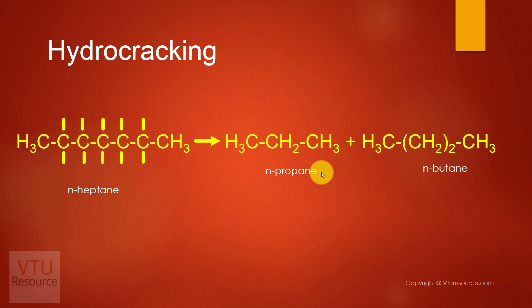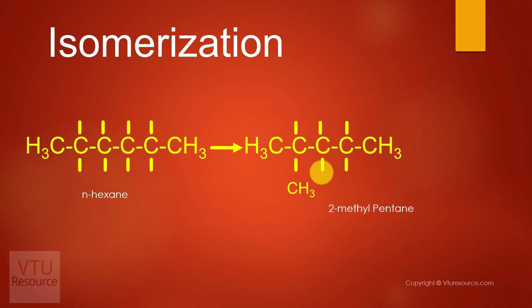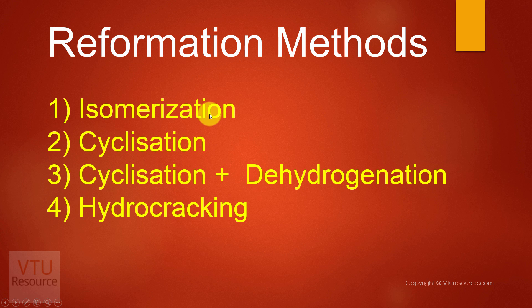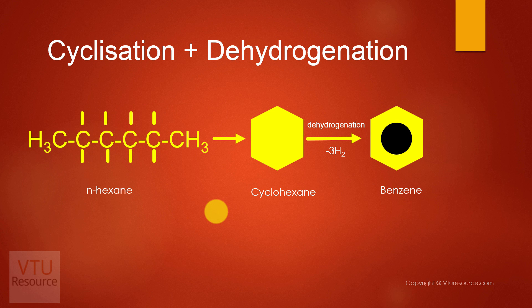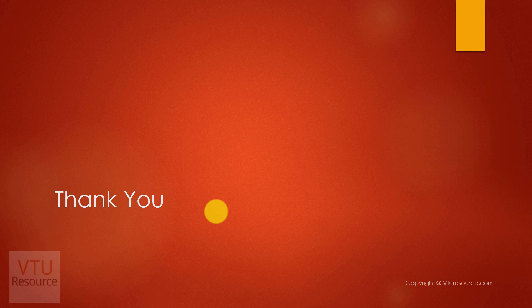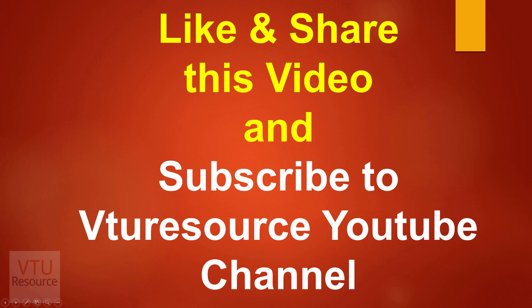We are supposed to explain the various steps: that is isomerization, cyclization, cyclization and dehydrogenation, and hydrocracking. For these four steps four marks and that one line carries one mark. So total five marks. Thank you. Please like and share this video and do subscribe to the VTU Resource YouTube channel.